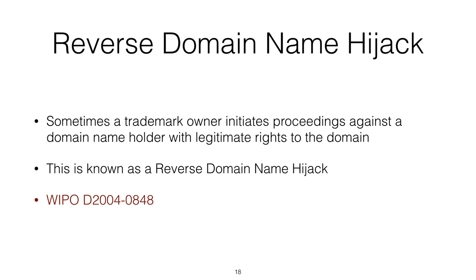Initially, the intent was that a finding of reverse domain name hijacking was going to be quite a serious thing and would be a major embarrassment for a company. When some UDRP providers were initially setting up, they even considered barring trademark owners from triggering the process for a certain period of time if a finding of reverse domain name hijacking was logged against them. We can see an example at the WIPO involving kiwi.com — judgments in UDRP cases are mercifully short, so it's easy to go and read the details.